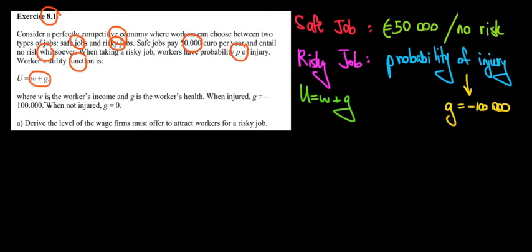Now when the worker gets injured, like in the case of the risky job, his health loses 100,000 euros, meaning he probably has to pay medical costs and all that. When he's not injured, he pays nothing in terms of these costs.